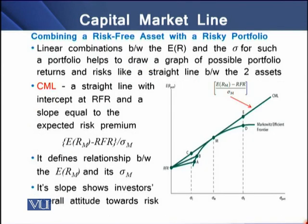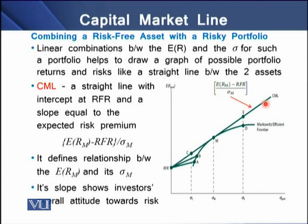When we combine a risk-free asset with a risky portfolio, the linear combination between expected return and riskiness allows us to draw a graph of possible portfolio returns and risk. This graph shows a straight line between the two assets, starting from the RFR on the vertical axis. That line is termed the CML, or Capital Market Line. The CML equation is a straight line with an intercept at the risk-free rate, and its slope equals the expected risk premium per unit of market riskiness.